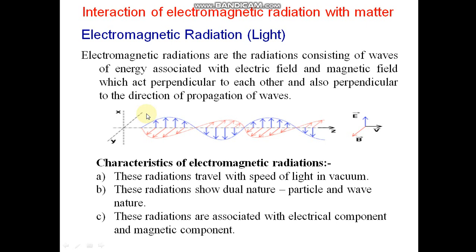Welcome to Interaction of Electromagnetic Radiation with Matter. What is Electromagnetic Radiation? Electromagnetic radiations are the radiations consisting of waves of energy associated with the electric field and magnetic field which act perpendicular to each other and also perpendicular to the direction of propagation of waves.